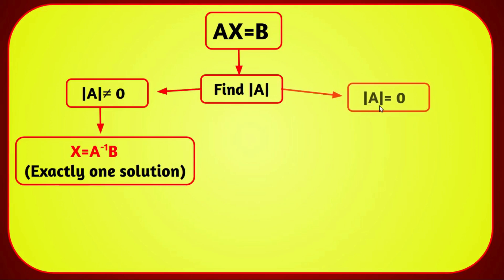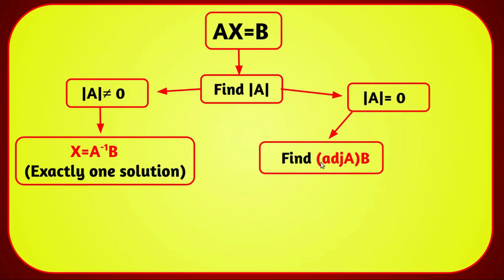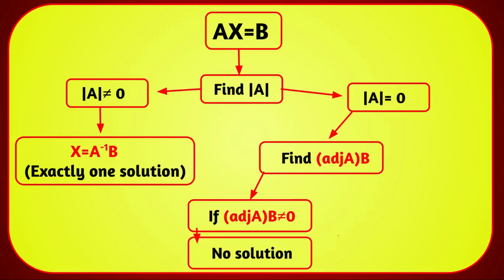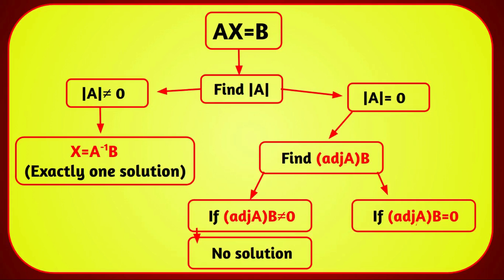If the determinant of A equals 0, we find the adjoint of A multiplied by B. If adj(A)·B is not equal to the zero matrix, the system has no solution — it is inconsistent. If adj(A)·B equals the zero matrix, the system has infinitely many solutions — it is consistent.